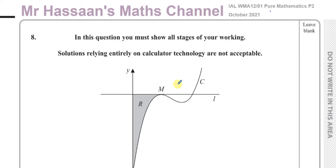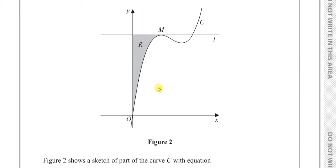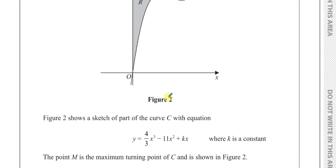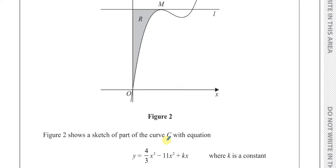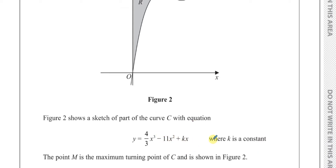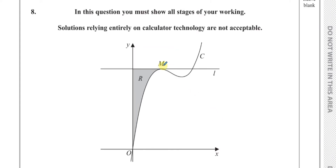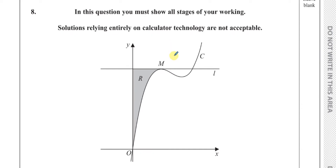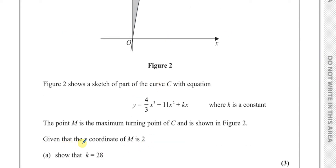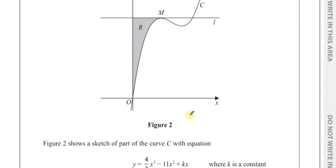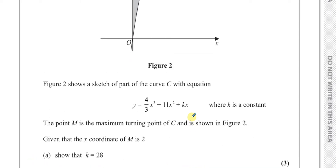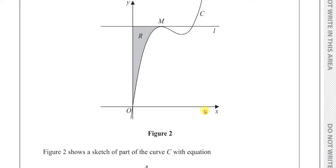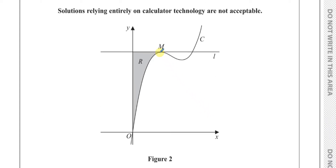In this question we have a sketch of a curve called C with equation y = 4/3x³ - 11x² + kx, where k is a constant. The point M is a maximum turning point of the curve C as shown in figure 2. Given that the x-coordinate of M is 2, show that k equals 28.